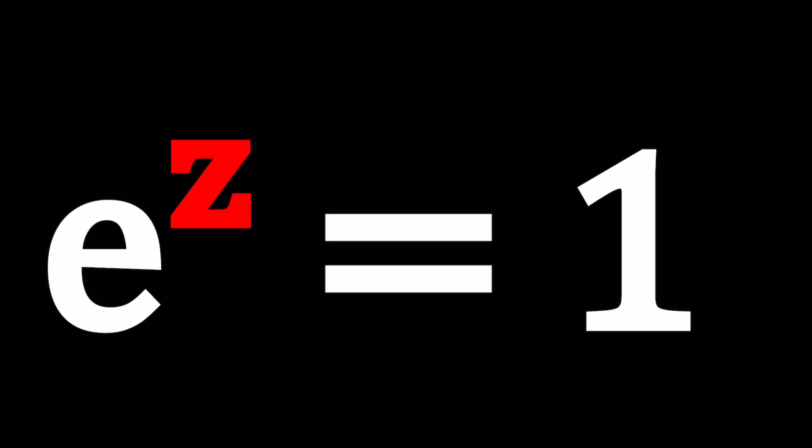We have e to the power z equals one and we're going to be solving for z values. Now you're probably thinking like isn't this way too easy? I mean we have the solution right away or if you're familiar with complex numbers you're probably going to come up with the solution quickly.